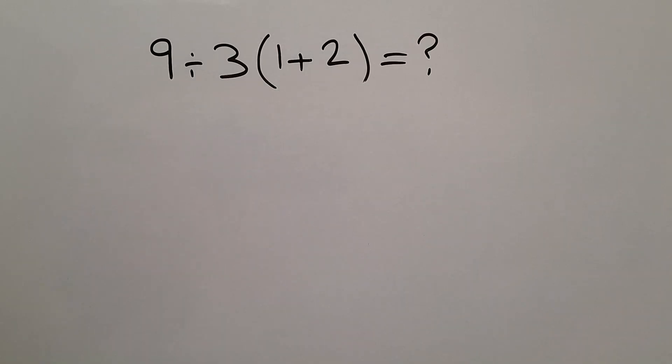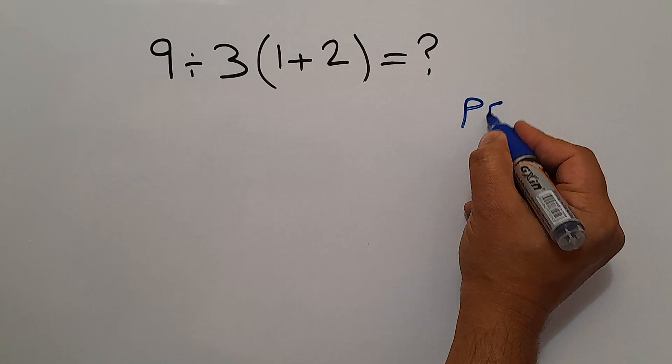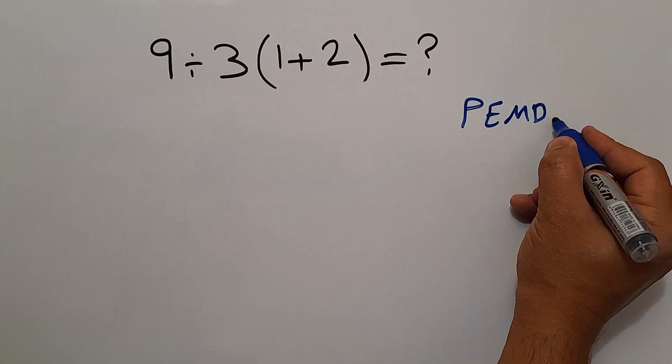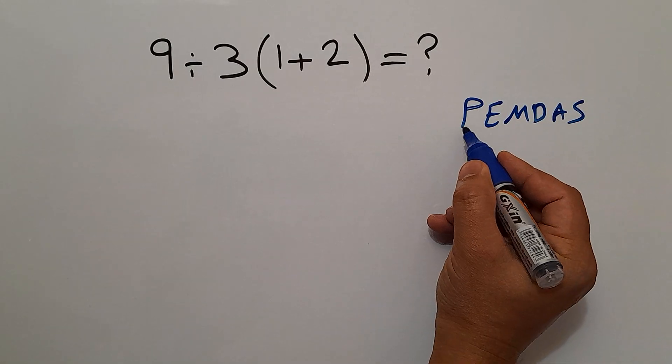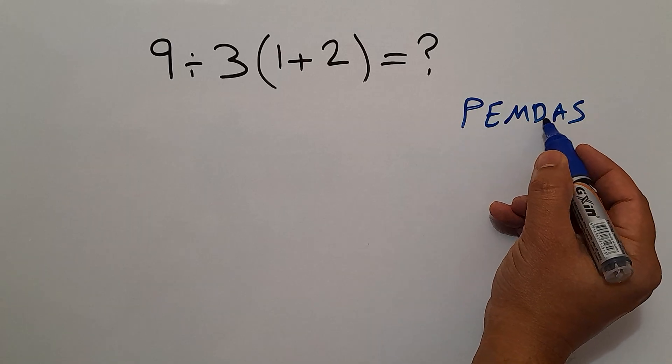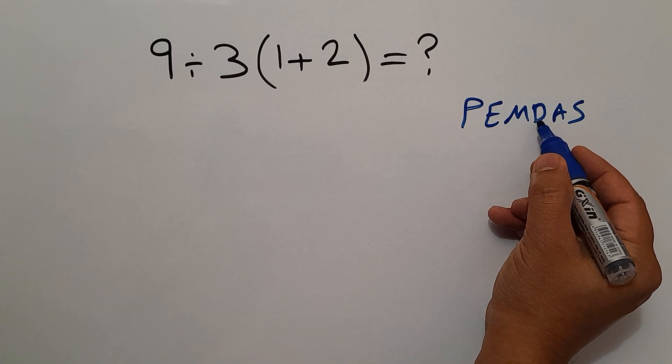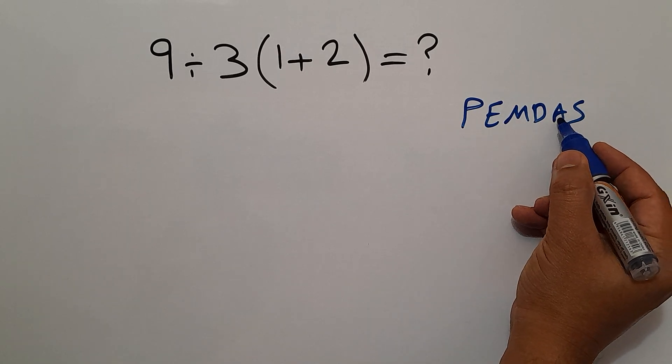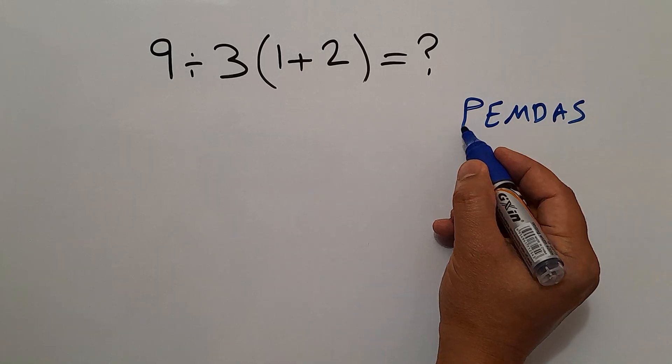Because according to the order of operations, which is PEMDAS, P stands for parentheses, E stands for exponents, M and D stands for multiplication and division, and A and S stands for addition and subtraction. We first do parentheses,